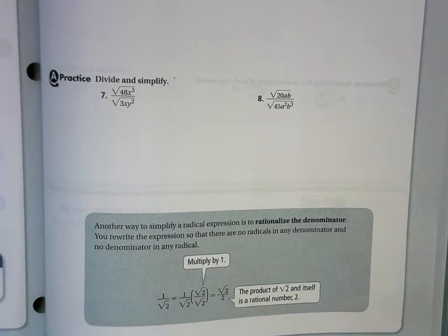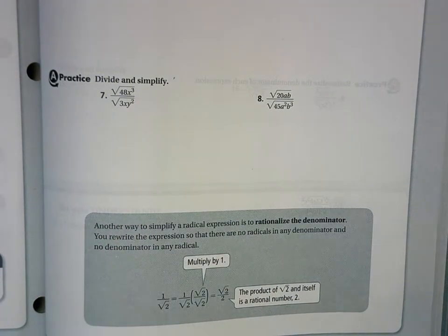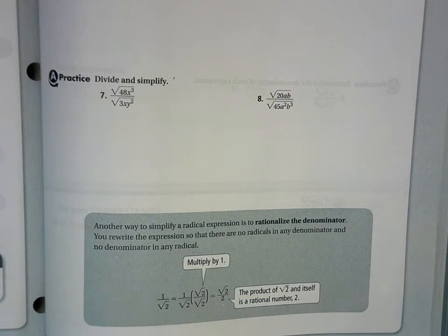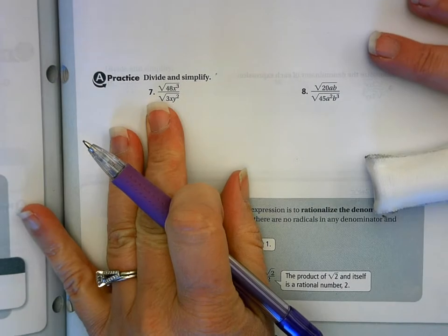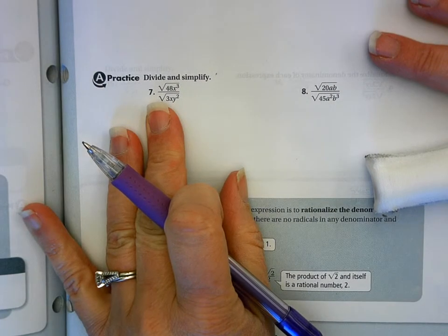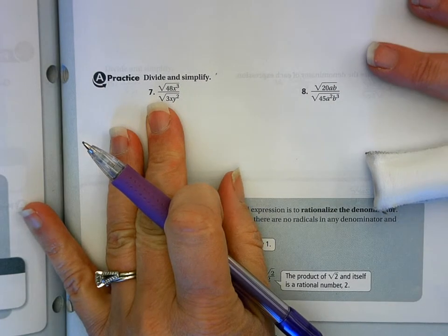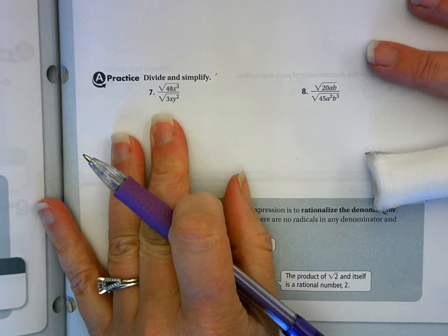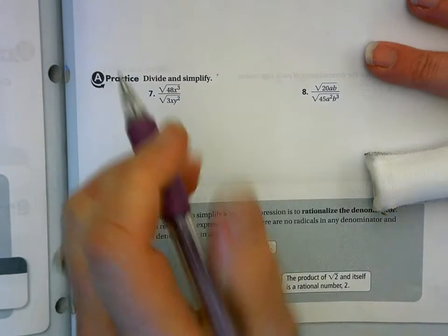This is for homework help on Unit 4 Objective 2, which is 6-2 in the Pearson book. I am on page 435, and we're going to take a look at question number 7. The directions are to divide and simplify.